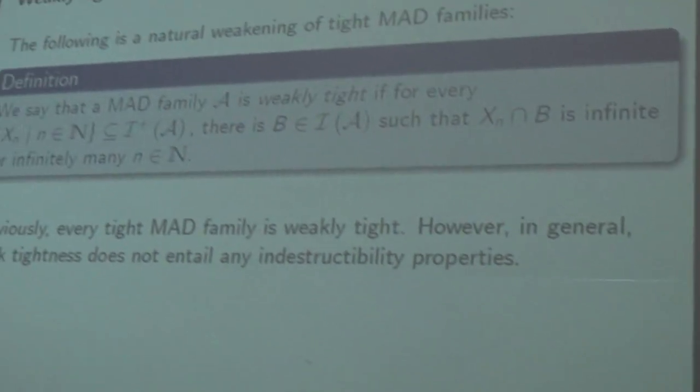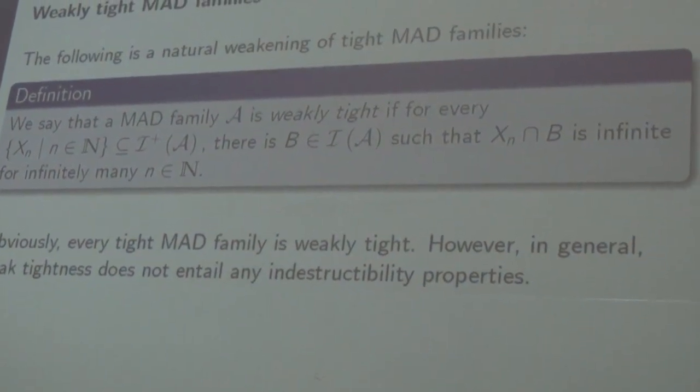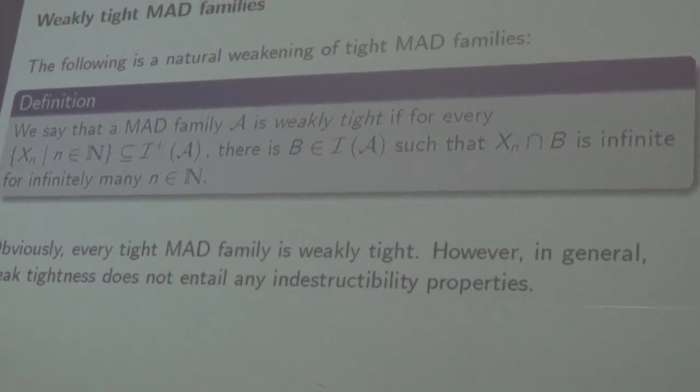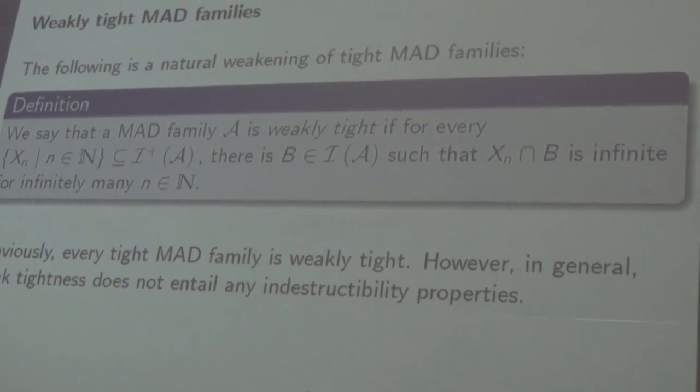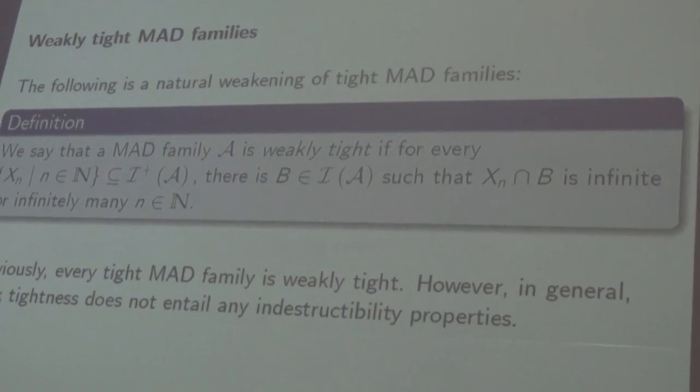We do not know if there is a tight MAD family in ZFC. There is a natural weakening: A is weakly tight if whenever you choose countably many positive elements, there is an element in I(A) that has infinite intersection with infinitely many of them. Every tight MAD family is weakly tight, but in general they are different, and in general weak tightness does not give any type of indestructibility.